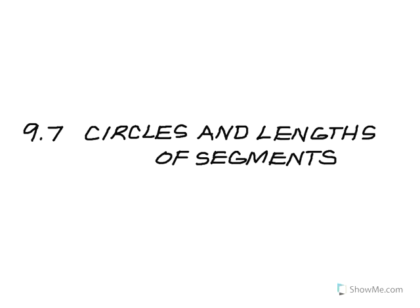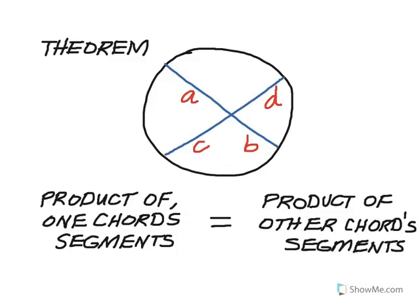Lesson 9.7 is about circles and lengths of segments. The first theorem is about when two chords intersect inside of a circle. When they do, the product of one chord's segments equals the product of the other chord's segment lengths. So in this example, the length of A multiplied by the length of B will be equal to the length of segment C multiplied by segment D.